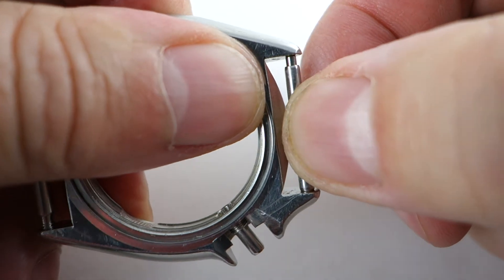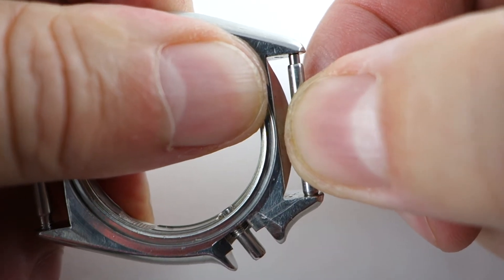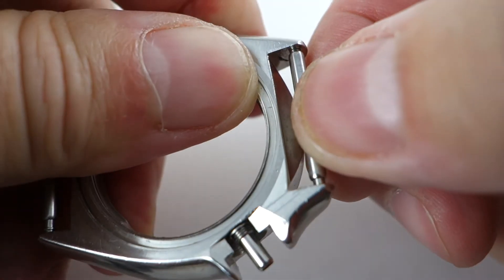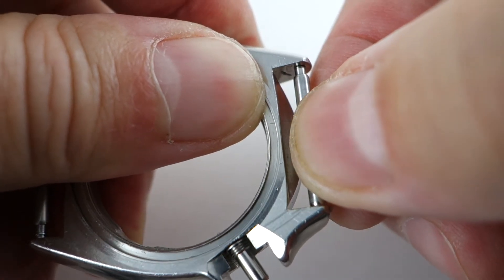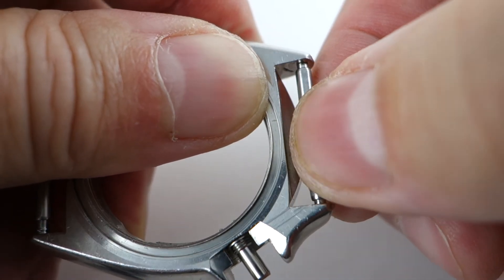But if you take the spring bar, you can actually hear the movement in the lug hole and see it. It's probably 0.5 millimeters of play in there.